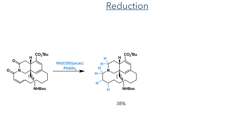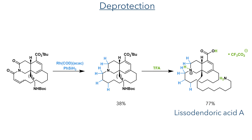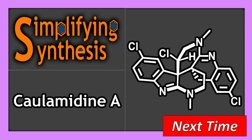With the macrocycle now complete, the authors needed to reduce the amide groups. This is quite a difficult task as the diene present in the azadecalin system is also susceptible to hydrogenation. They found that they could use a rhodium catalyst together with phenylsilane to reduce the three target groups and leave the diene intact. While this only produced the target compound in a 38% yield, it is impressive that they could achieve this level of selectivity. With this reduction complete, a simple TFA deprotection of the remaining Boc and tert-butyl ester groups yielded Lysodendoric Acid A in a 77% yield as the TFA salt. Join me in the next video where we will look at the total synthesis of Carllameddine A.